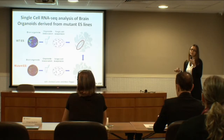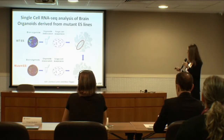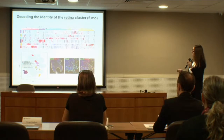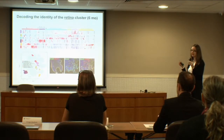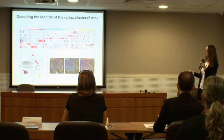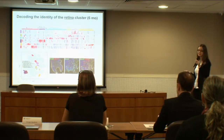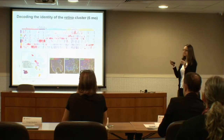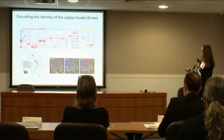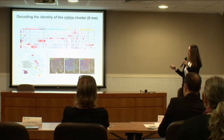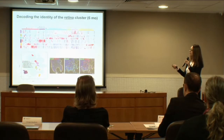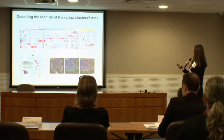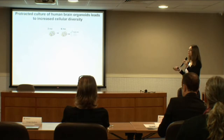We also focused on the retina cluster. Comparing our data with published datasets on endogenous retina cells, we found that our organoids contain all the different retinal cell types present in the human retina — which is really amazing given that these cells self-organize. We also found cell types such as Müller glia and mature photoreceptors that are present only at very late stages of human eye development.